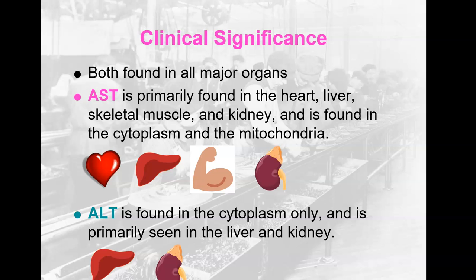Their clinical significance is that they are both found in major organs, but AST is primarily found in the heart, liver, skeletal muscle, and kidney. Its cellular location is the cytoplasm and the mitochondria. ALT is in the cytoplasm only and is primarily seen in the liver and kidney. This is relevant because it helps you interpret patterns of elevated AST or ALT. If both are elevated, you look at liver or potentially kidney. But if only AST is elevated and ALT is normal, it might be heart or muscle.